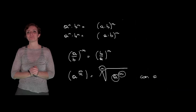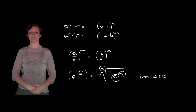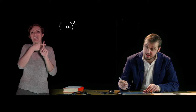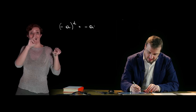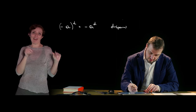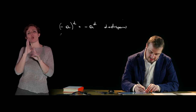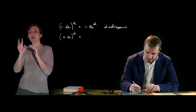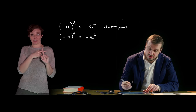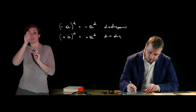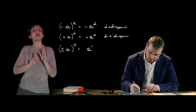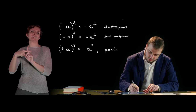Questa è definita per A maggiore o uguale di zero. L'ultima cosa riguarda il segno di una potenza. In particolare, se l'esponente è un numero dispari e la base è negativa, abbiamo un mantenimento del segno della base, per cui se la base è negativa e l'esponente è dispari, il risultato darà luogo a un numero negativo. Se la base è positiva, il risultato sarà un numero positivo. Se invece l'esponente è un numero pari, sia che la base sia positiva o negativa, avremo come risultato sempre una quantità positiva.